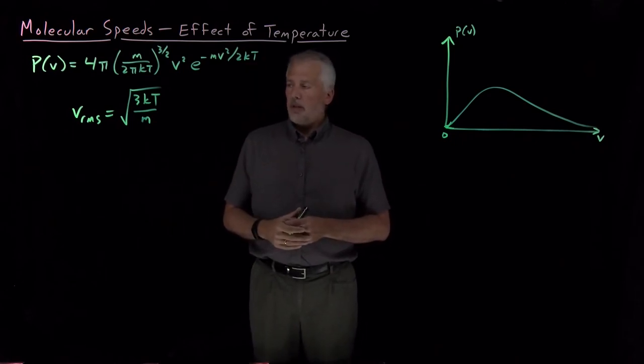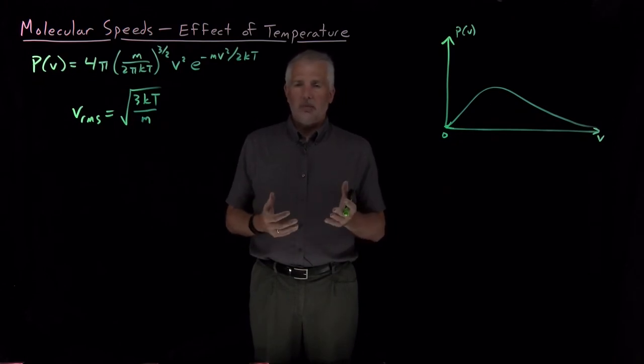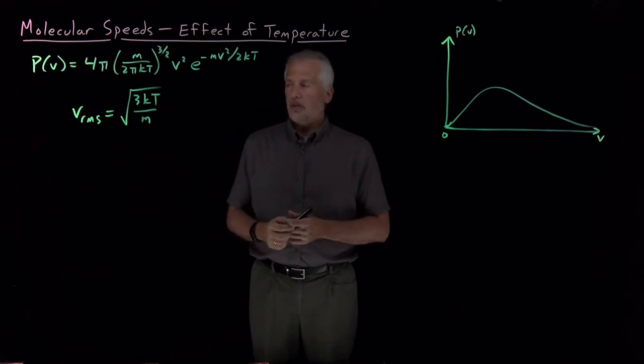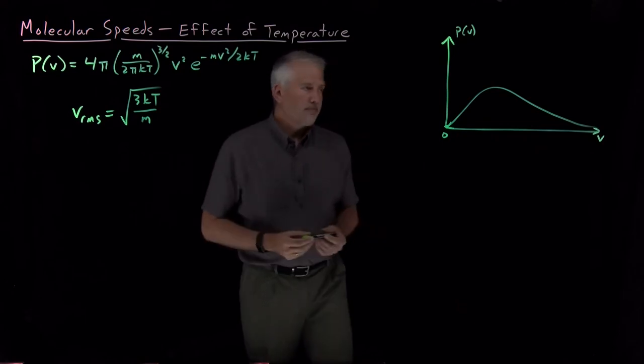From the most simplistic point of view, when the temperature goes up, you expect the molecules to move faster. You expect the root-mean-square and the average and the most probable speeds to be higher because T is in the numerator of this square root. But there's another somewhat more subtle and complicated effect as well that we can see.